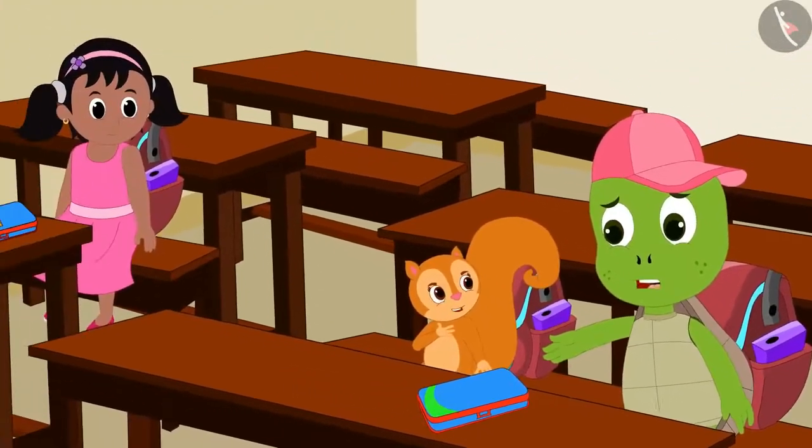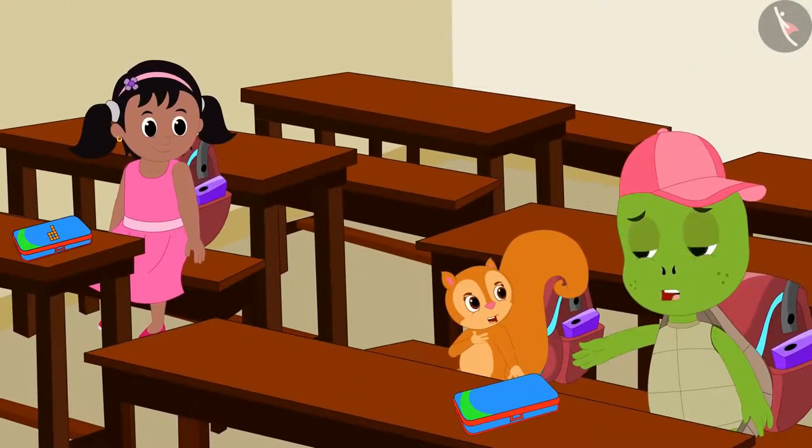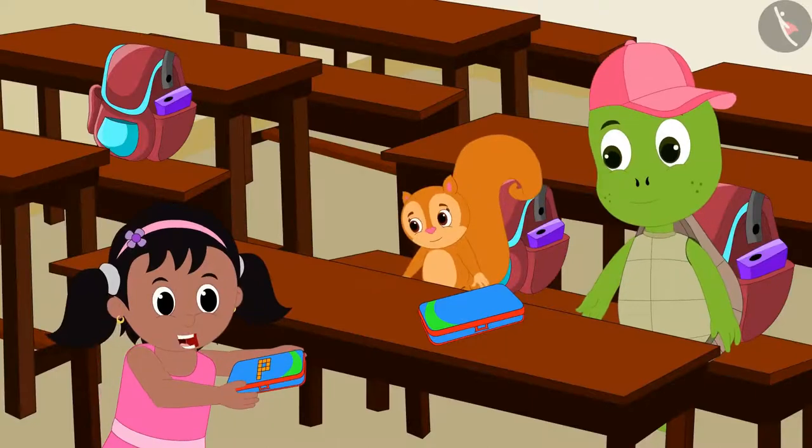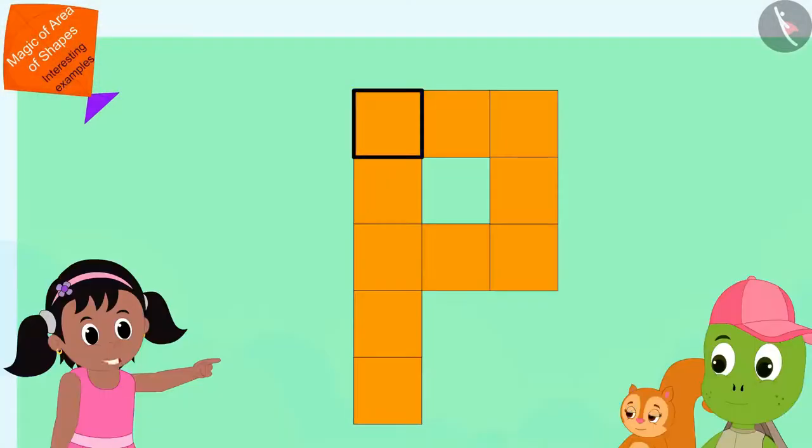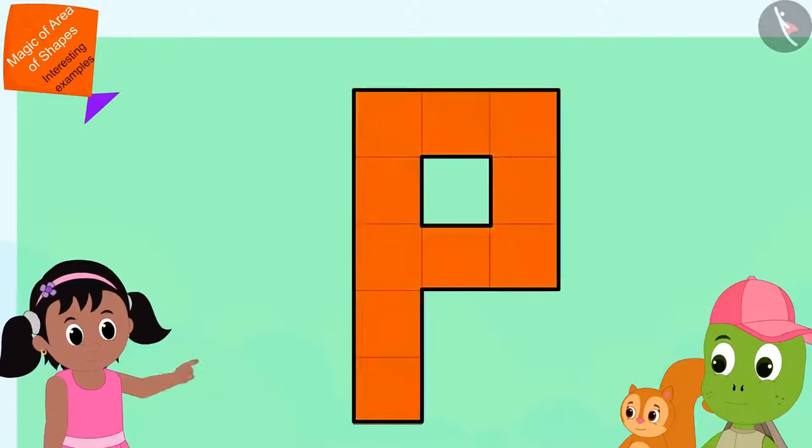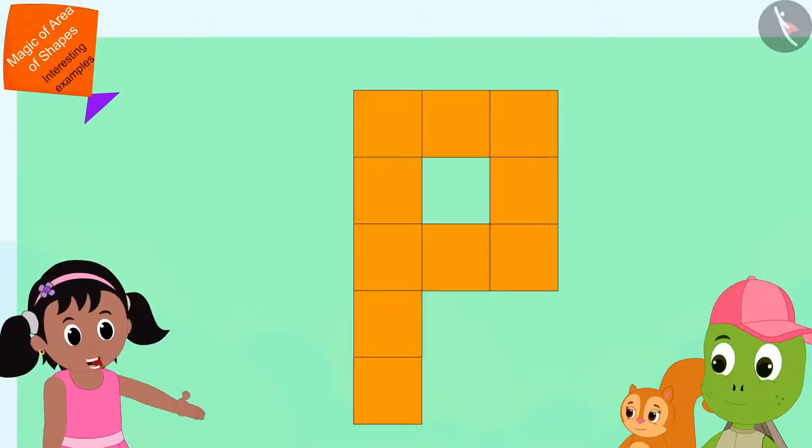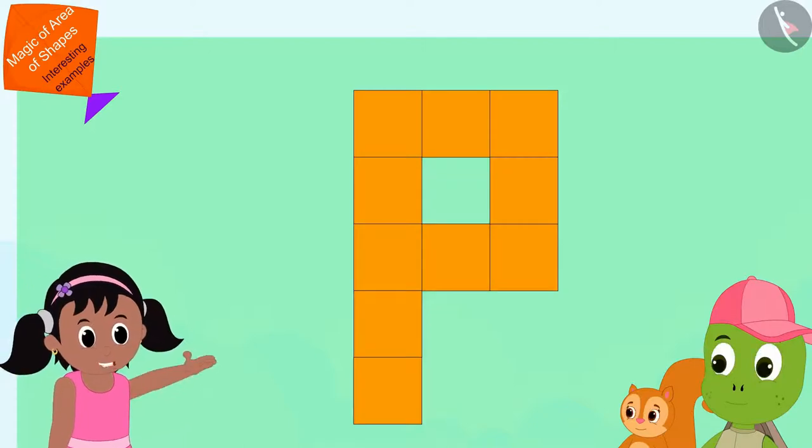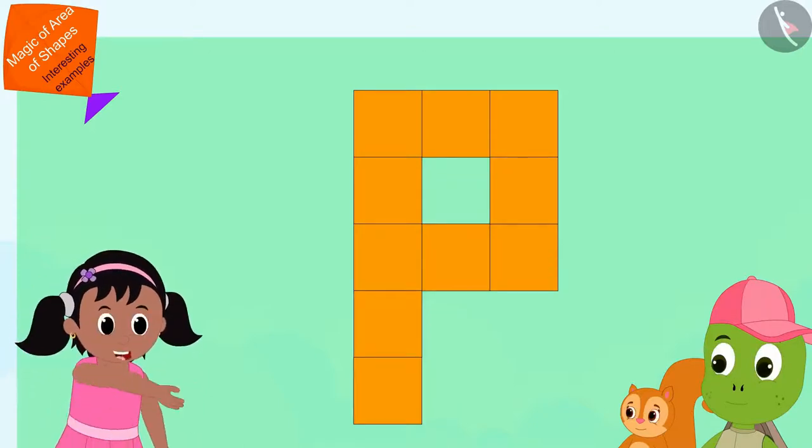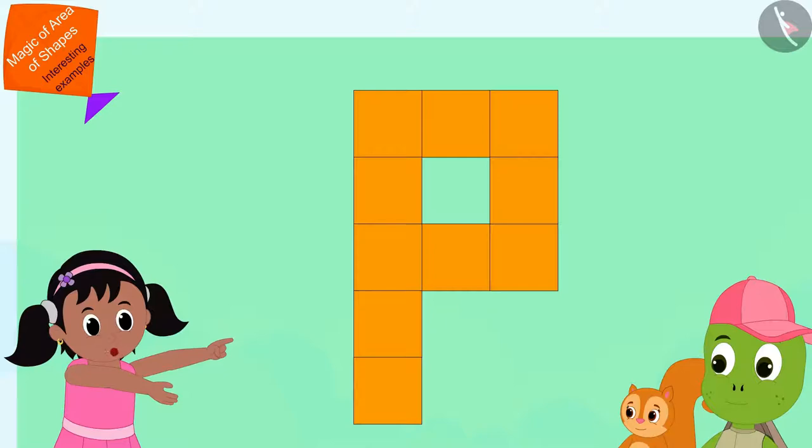Seeing Tufan and Chanda fighting, Pinky said, Look, I've used these square-shaped stickers on my compass box to make my name letter P. This allows me to easily identify my compass box. Why don't you both use these stickers to draw the letters of your name on your compass box?